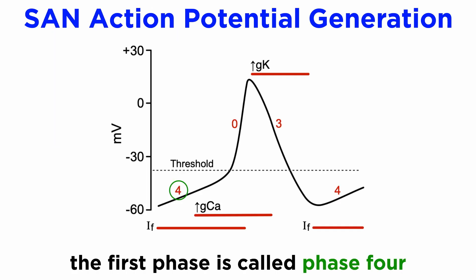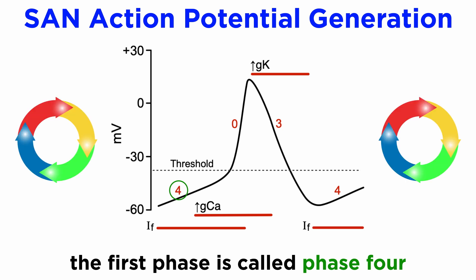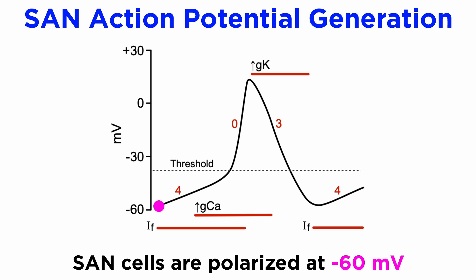Counterintuitively, the first phase of SAN action potential generation is known as phase 4. However, since this is a repeating sequence of events, it isn't terribly important where in the cycle one considers the beginning. Before phase 4, the SAN cells are polarized at negative 60 millivolts.